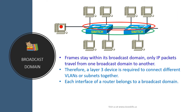Frames stay within their broadcast domain only — IP packets travel from one broadcast domain to another. Therefore a layer 3 device is required to connect different VLANs or subnets together. For example, if this host in VLAN 1 wants to send data to this host in VLAN 2, it has to send via the router. So each interface of a router belongs to a broadcast domain.